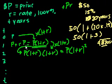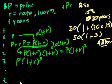So if we go to year three, we're going to multiply this times 1 plus r. So year three is P times 1 plus r to the third. So year t is going to be principal times 1 plus r to the t-th power.